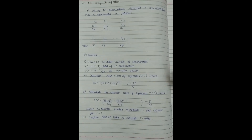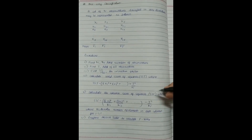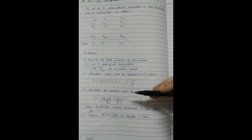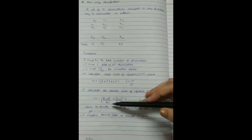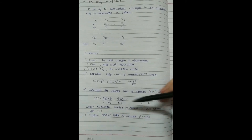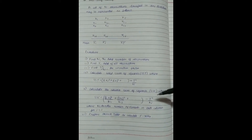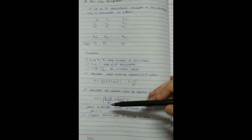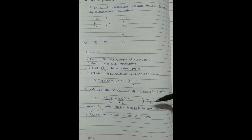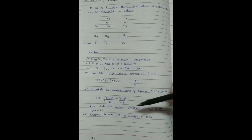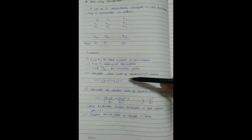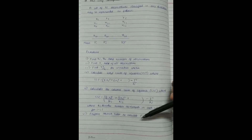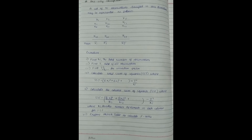We then calculate the column sum of squares SSC, where SSC equals the summation of (xᵢ)² divided by nᵢ, totaled and then minus T²/n. Here nᵢ denotes the number of elements in each column for i = 1, 2, and so on. After all these steps we prepare the ANOVA table to calculate the F ratio.